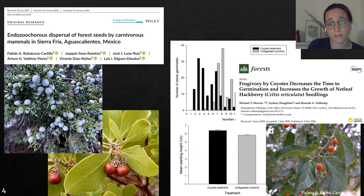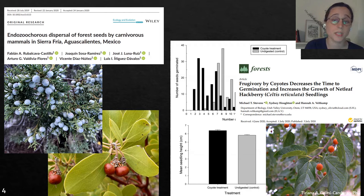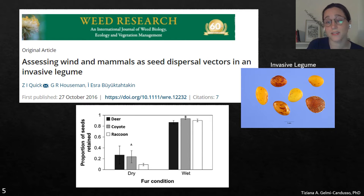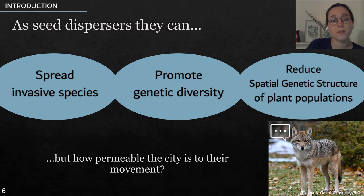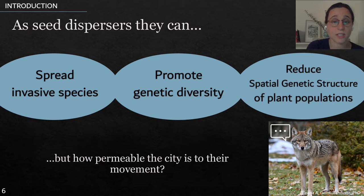Research shows that one scat of coyotes can contain up to a thousand seeds of fleshy fruits, and for some fleshy fruits, germination rate can be increased. Some seeds dispersed by animals can attach to coyotes for up to two days with high viability, especially when the coyotes are wet. As seed dispersers, they can spread invasive species, promote genetic diversity across green areas, and with the long-distance movement they are known for, they can reduce species structure of plant populations, increasing their overall fitness.